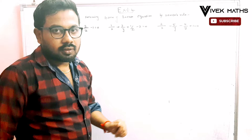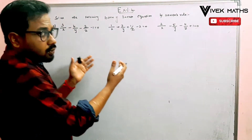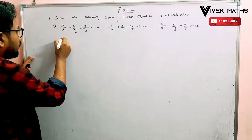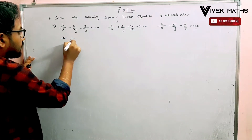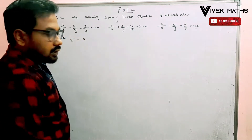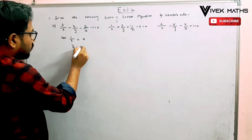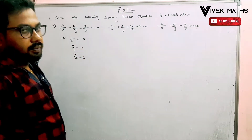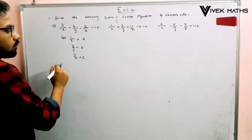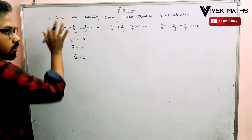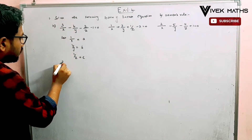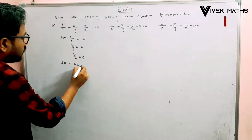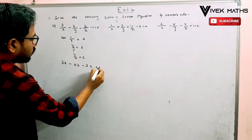These are fraction-based equations. Let 1/x equal to a, and 1/y equal to b, and 1/z equal to c. Substituting, the first transformed equation becomes: 3a minus 4b minus 2c equal to 1.